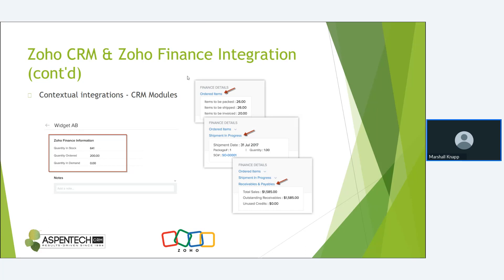There are also contextual integrations once you set up the finance integration. From inside a customer record in Books, you can actually see the CRM record — all the main fields and data — which can be handy even if you didn't map that information over. Within various CRM modules, you'll also find data from the Finance Suite. Under a product, for example, you'll see quantity in stock, quantity on order, quantity in demand — drawing directly from accounting data. On an account, you can see total sales and outstanding receivables right from within CRM.